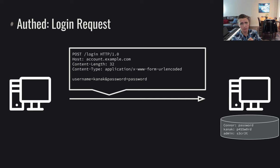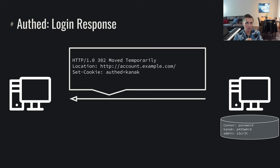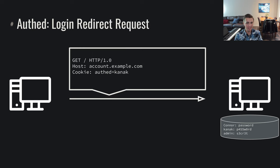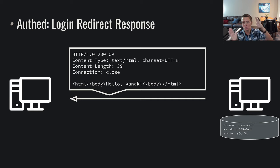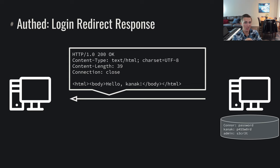Someone else can log in additionally. We make another login request to the login resource with username equals Canac and password equals password. We get a Set-Cookie auth equals Canac, we're moved temporarily, go back to the root resource, and say auth equals Canac. Even though we have two separate requests both making a request to this root resource, the state is being maintained. When Connor logged in, Connor got hello Connor; when Canac logged in, they got hello Canac — we are maintaining this state through cookies.